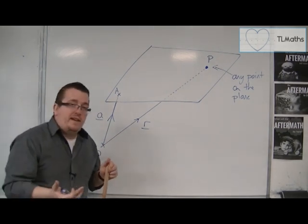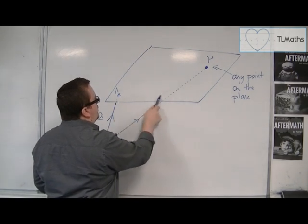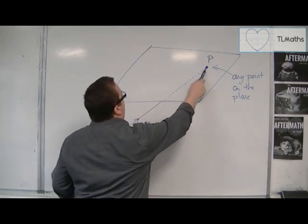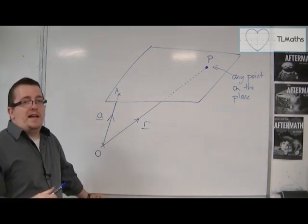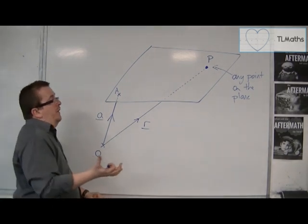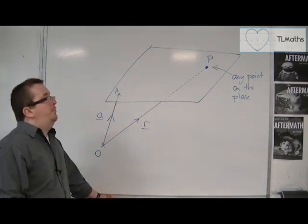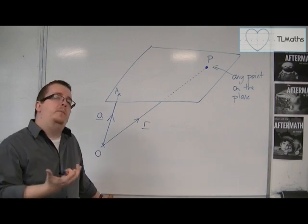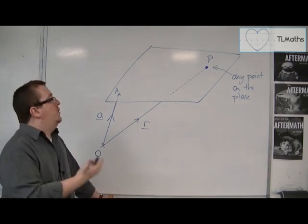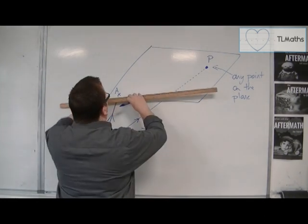I then need to go a certain amount in one direction, and then a certain amount in another direction in order to get to P. Because it would be lovely if I knew a vector that would get me straight from A to P. But because P has to be any point that's on the plane, I can't do it with just one vector. I actually need two vectors.